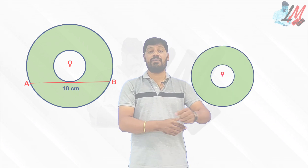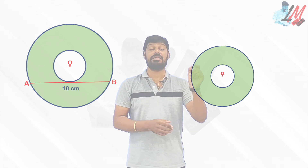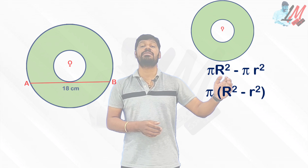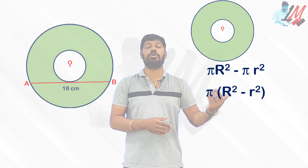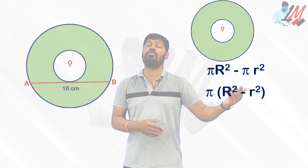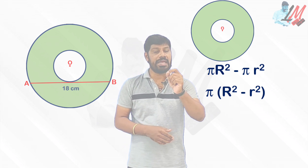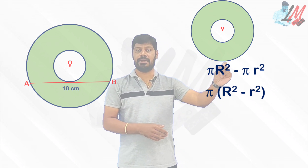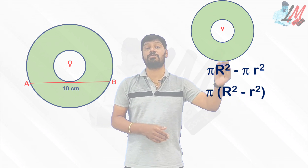When two concentric circles are given, the area between the two circles is called a ring. The ring area formula is π·R² − π·r², and taking π common we get π(R² − r²), where capital R is the radius of the big circle and small r is the radius of the small circle.